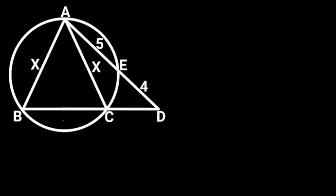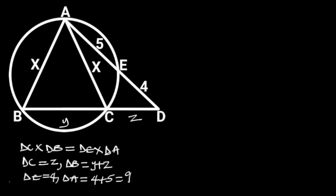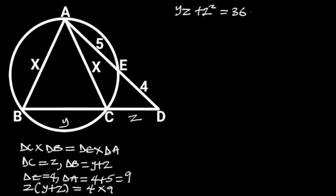To solve this problem, first let's take BC as Y and DC as Z. From the secant theorem, DC times DB is equal to DE times DA. DC is equal to Z, DB is equal to Y plus Z, DE is equal to 4, and DA is equal to 4 plus 5, which is equal to 9. Substituting these values gives us Z times (Y plus Z) is equal to 4 times 9. Simplifying gives us YZ plus Z squared is equal to 36. Let's call this equation 1.